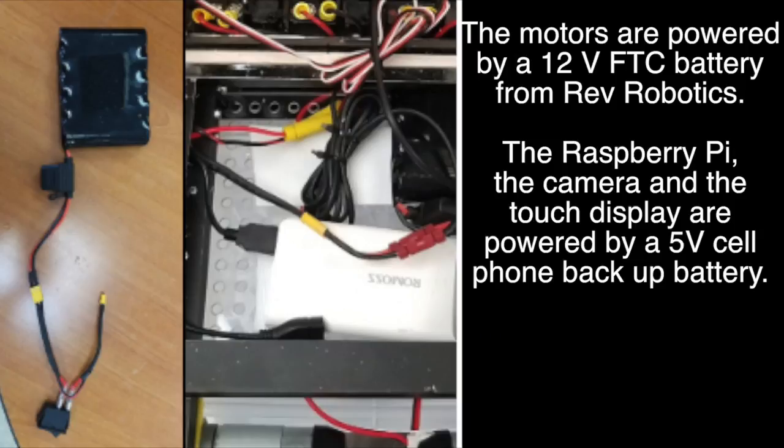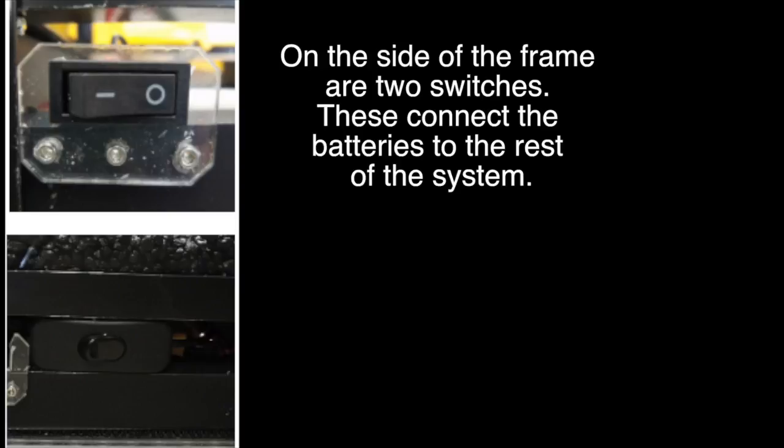The motors are powered by a 12-volt FTC battery from Rev Robotics. The Raspberry Pi, the camera, and the touch display are powered by a 5-volt cell phone backup battery. On the side of the frame are two switches. These connect the batteries to the rest of the system.